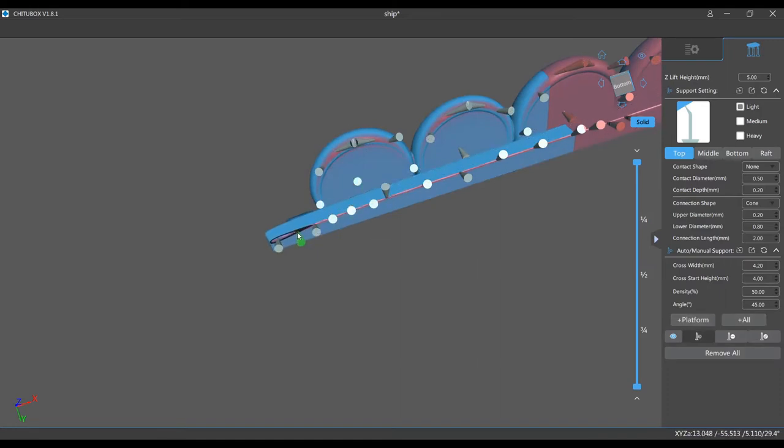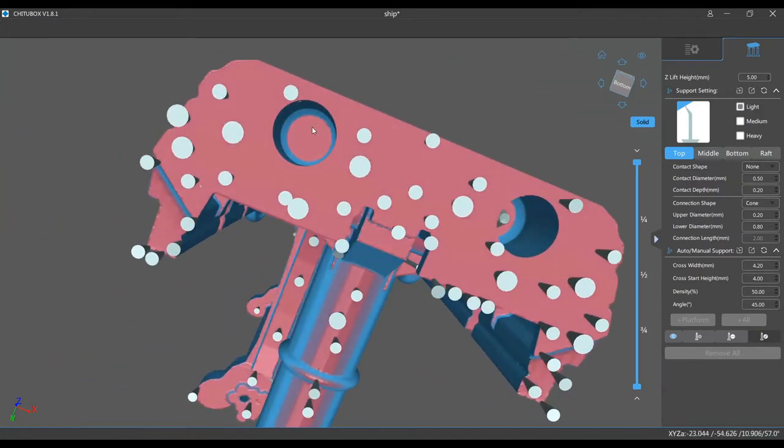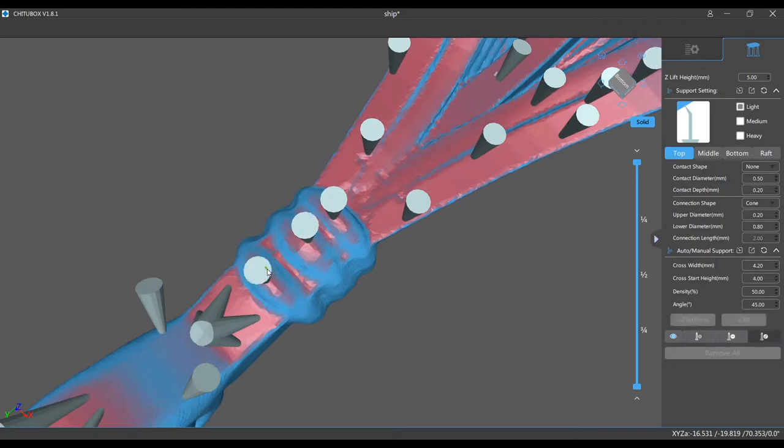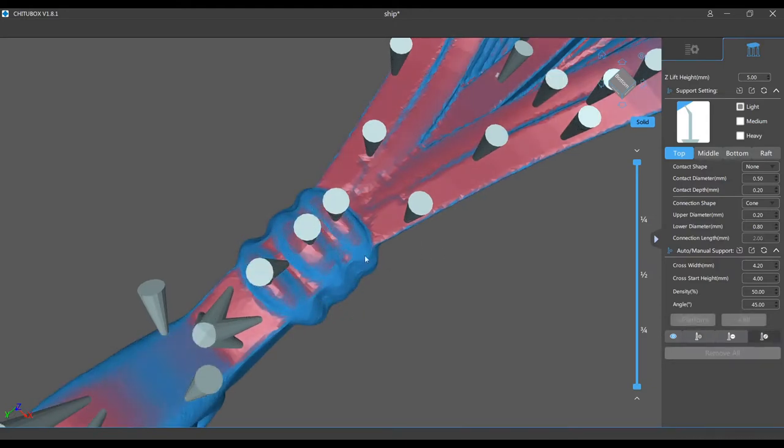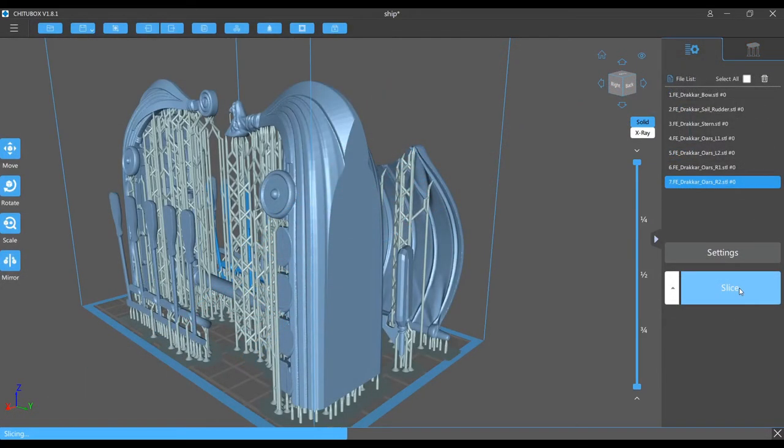If you are using Chitu Box, don't trust auto supports. I like to hit auto support and then go through and add other ones that I want, because auto supports by themselves are not going to work. As far as my supports go, for the most part I'm just running 0.20s on the light setting there. I've reduced the middle thing down a little bit too so that if it uses those little tiny sticks in between tight areas, they'll be very small. They print out about the size of a human hair.